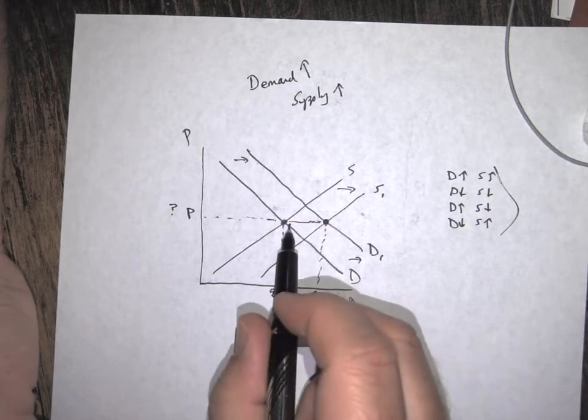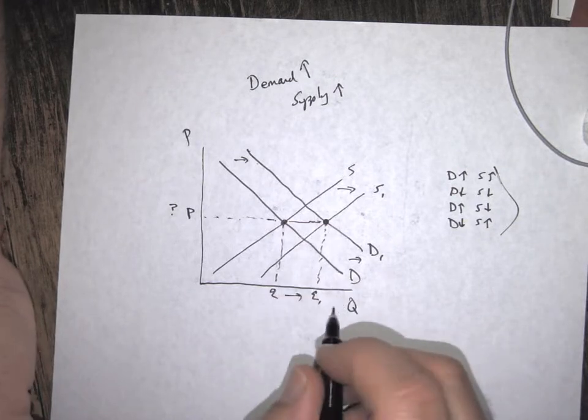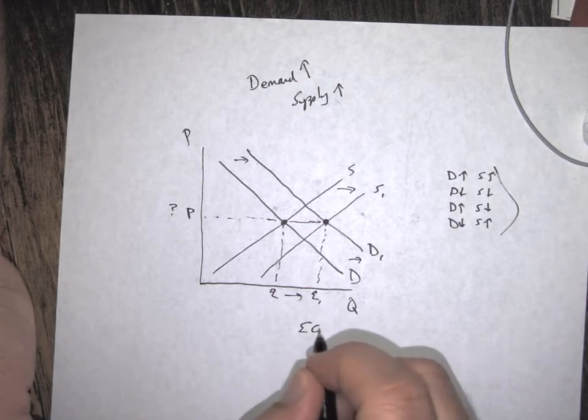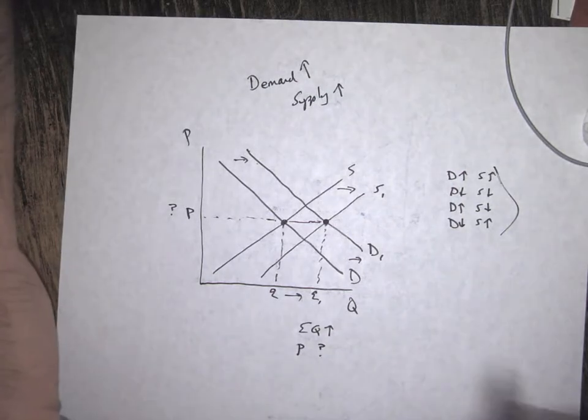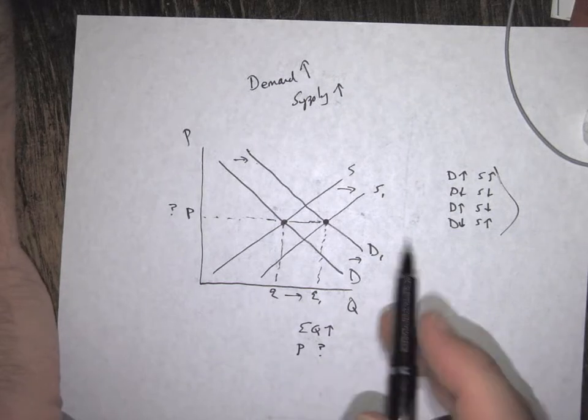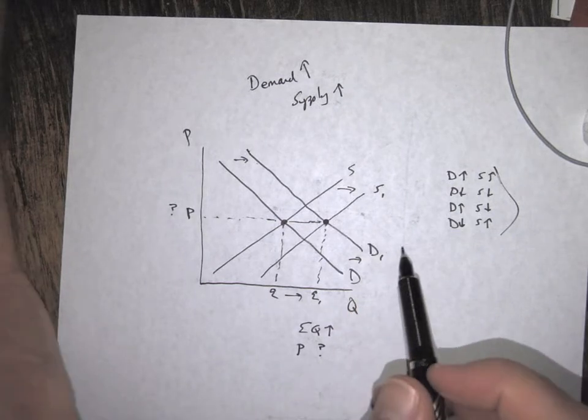going to end up increasing because look, it's to the right of this one. So equilibrium quantity has gone up and price is indeterminate. That means it just didn't do anything. So when I say let the labels tell the